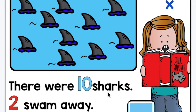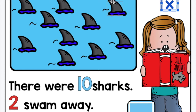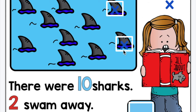There were 10 sharks. Two swam away. How many are left? So I need to start with 10, which I have in the ocean here, and it says two swam away. So I can take two of my little X's and drag them over to show two of my sharks swam away. So there I've crossed out two and they've swam away.